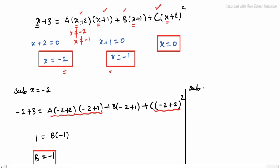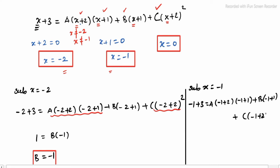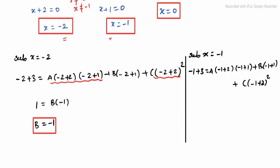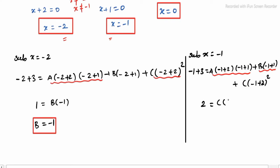Substituting x = minus 1: minus 1 + 3 = A(minus 1 + 2)(minus 1 + 1) + B(minus 1 + 1) + C(minus 1 + 2)². The A and B terms become 0 because (minus 1 + 1) = 0. Left side is 2 = C(1)². Finally, C = 2.